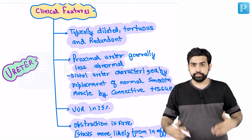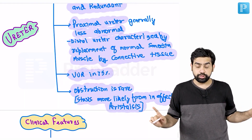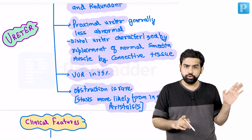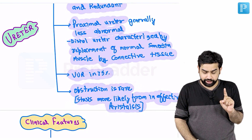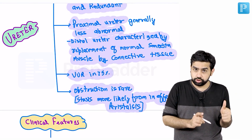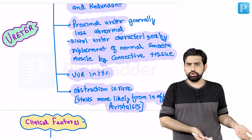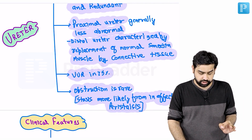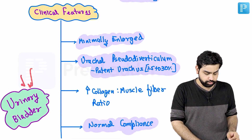VUR is present in 75 percent of patients — an important number to remember. True obstruction is rare. Stasis is more likely due to ineffective peristalsis, since muscles are replaced by connective tissue, which is the main reason for urine stagnation in these patients.